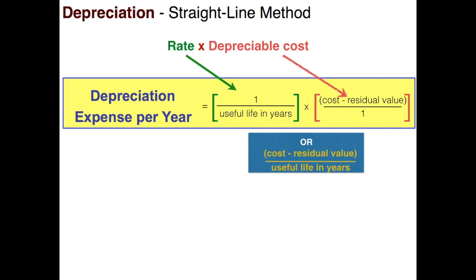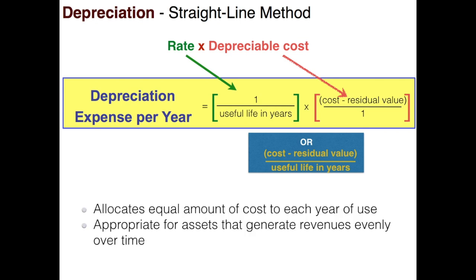Straight-line depreciation allows us to allocate an equal amount of the asset's cost each year over its entire life. This method is most appropriate for assets that generate revenues equally or evenly over time.